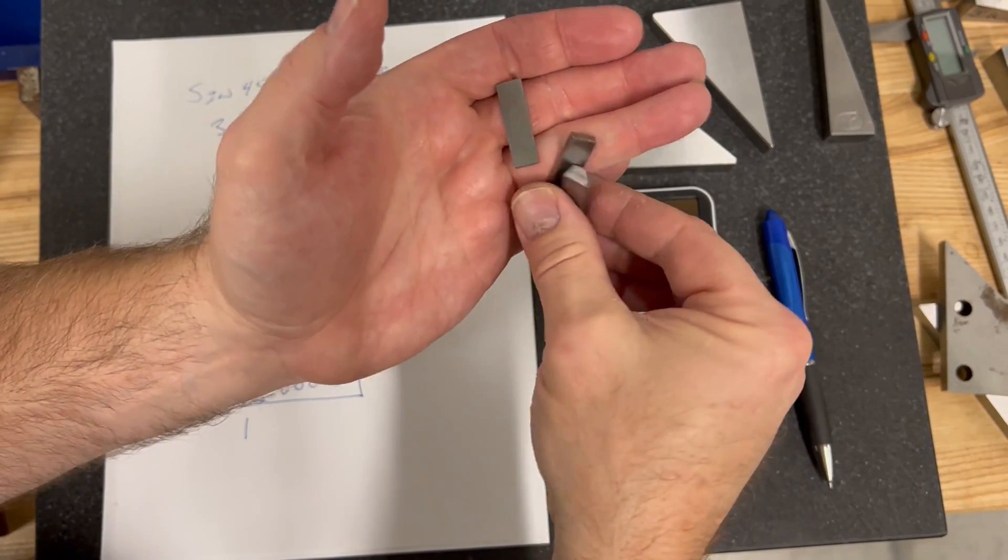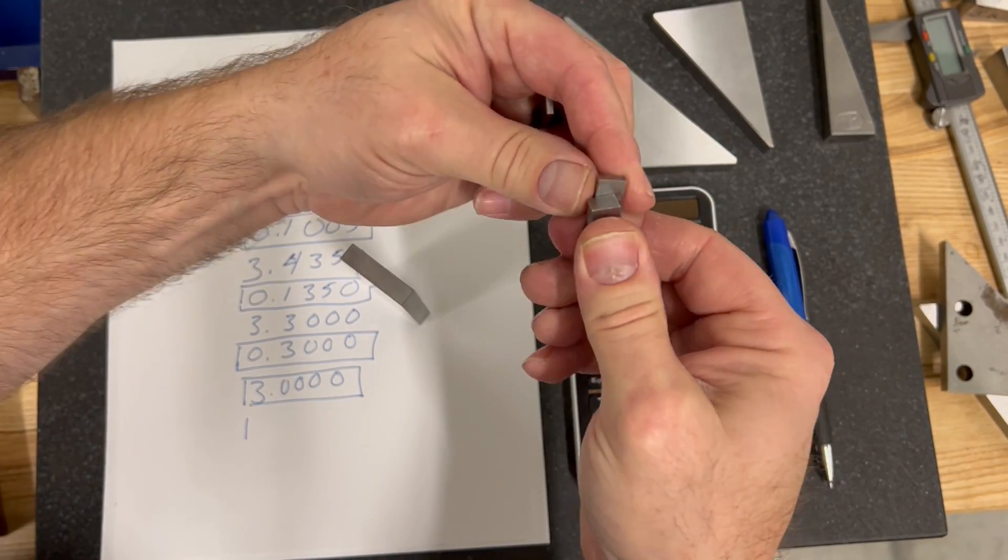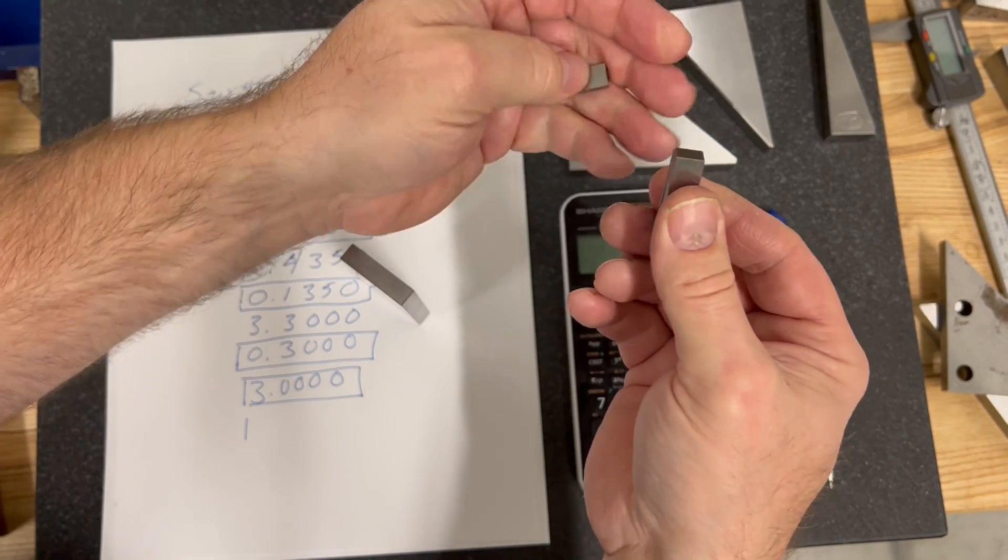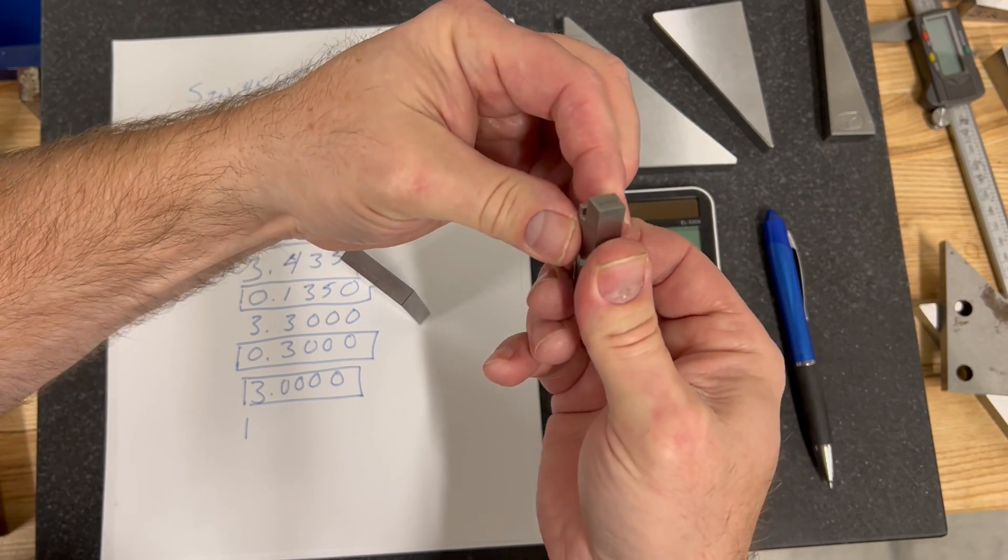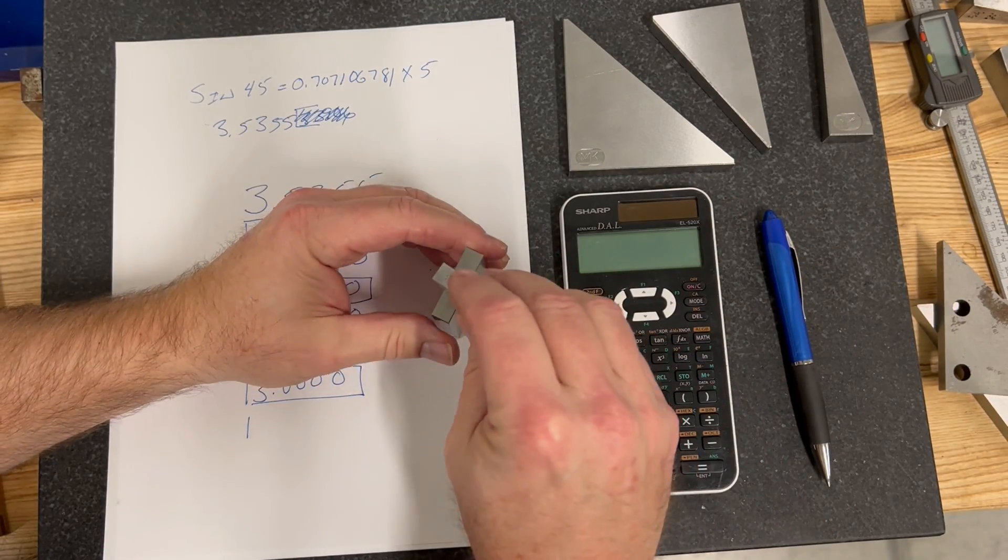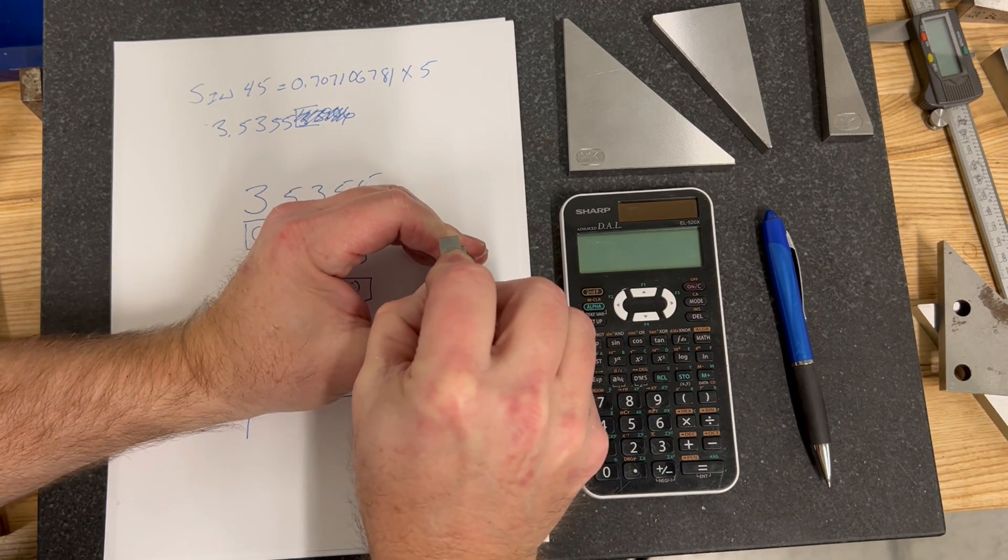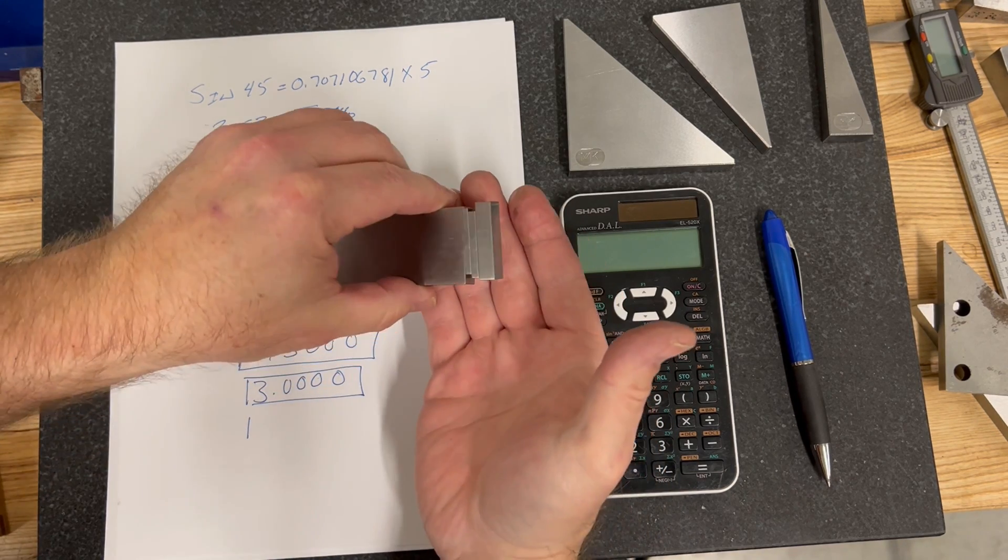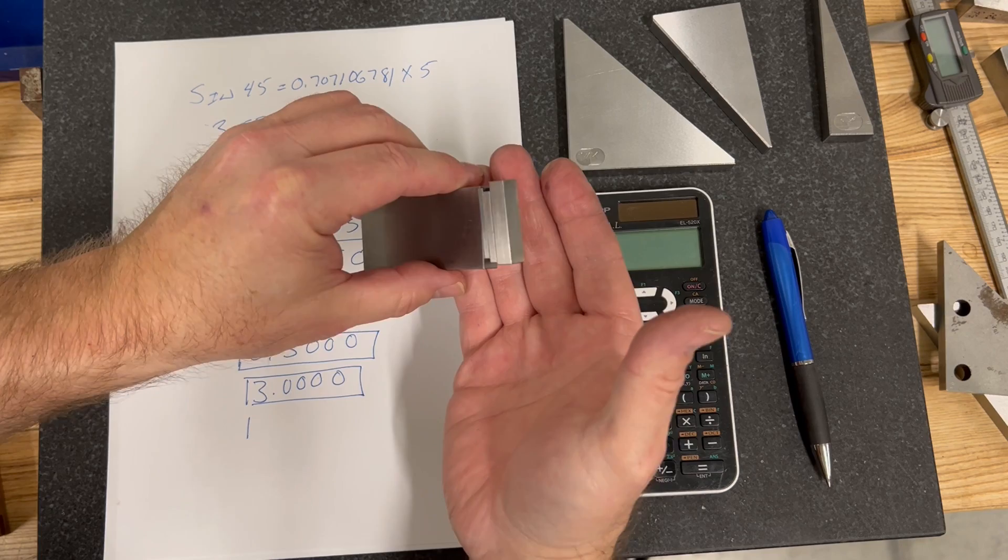We want to ring our gauge blocks together. So we make sure that they're clean, no grease, no oil. And they should stick together, not a problem. Some guys say you put them in at 90 and then you rotate and turn them. That works as well. They should just stick together using friction.